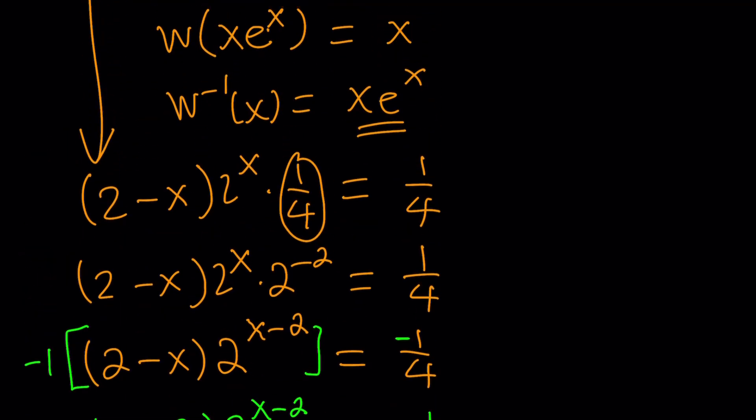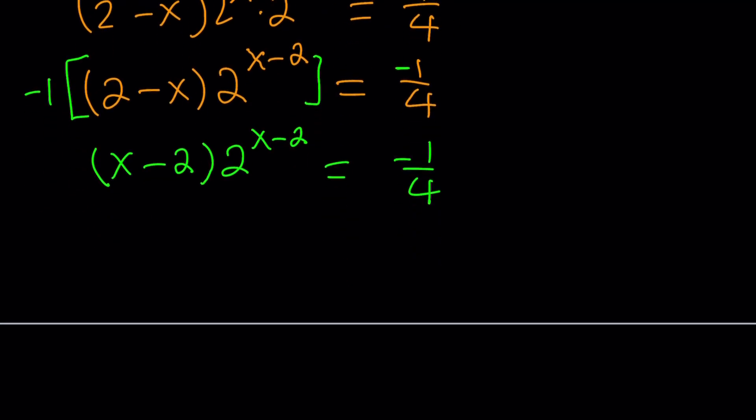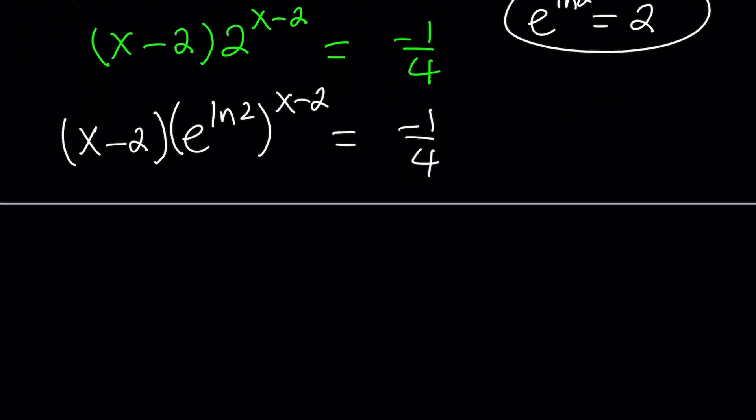When you multiply 2 minus x by negative 1, it becomes x minus 2. We almost got what we wanted, and this is going to be negative 1 fourth. Notice that the x minus 2 and the x minus 2 are the same. Now we have to take care of the 2, because in Lambert's W, you do need e at the base. Remember, e to the power ln 2 is the same thing as 2, so we're going to replace 2 with that.